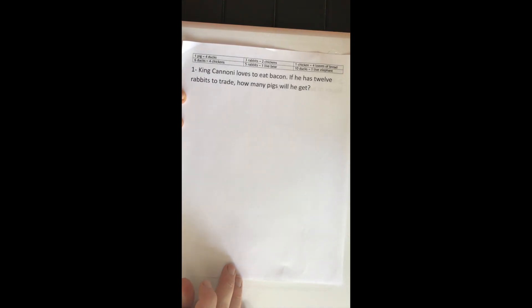Okay, let's start with problem 1. Problem 1 says King Canone loves to eat bacon. If he has 12 rabbits to trade, how many pigs will he get?